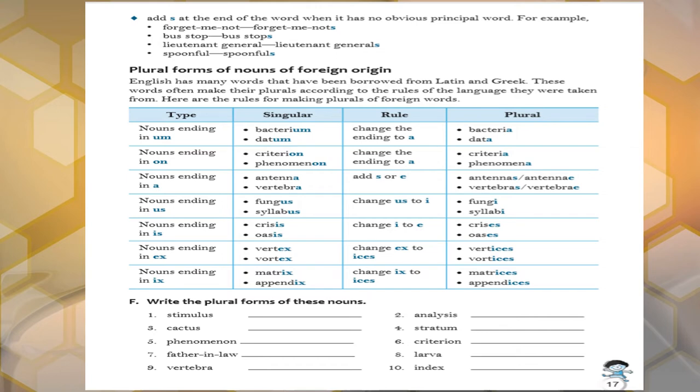Now plural form of nouns of foreign words are given children. You know, in English language, there are very few words, around 800 something words are there original. Words are borrowed from Latin and Greek.